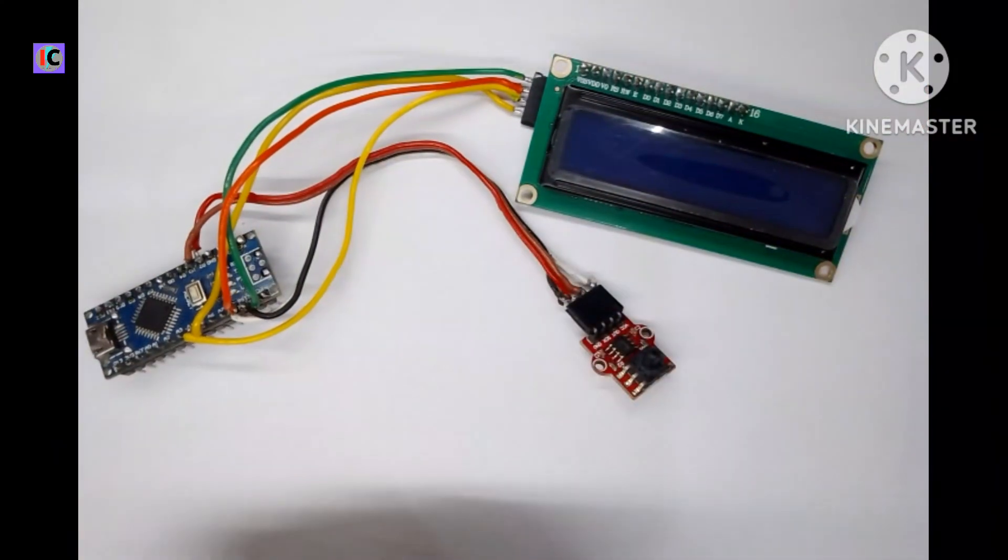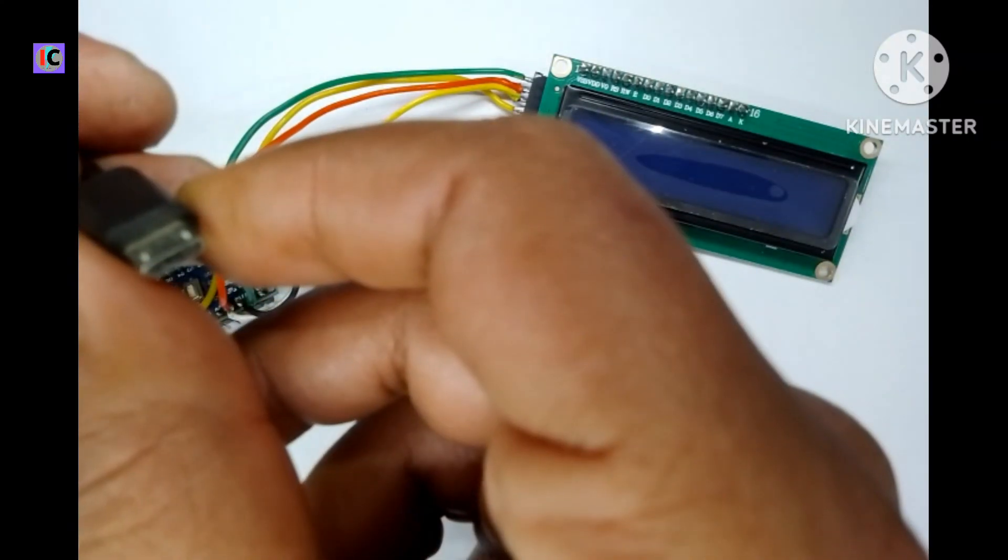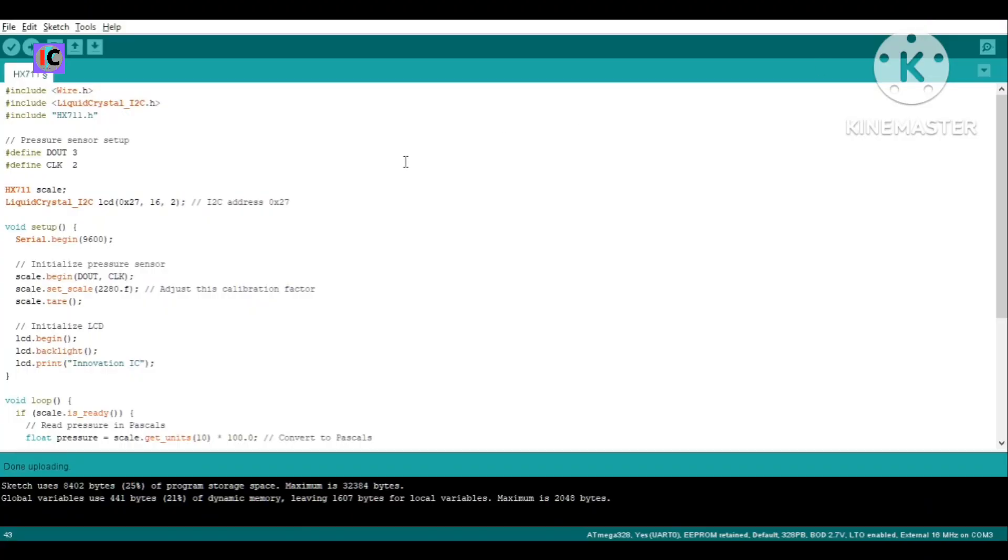Here we have the HX711 library for working with this sensor. Basically this has a scaling type of system. We will include all the necessary libraries.